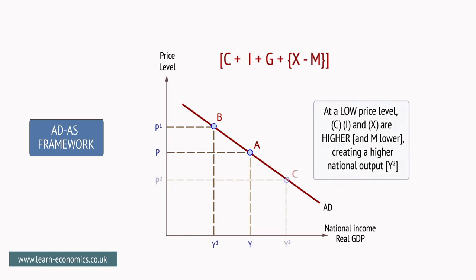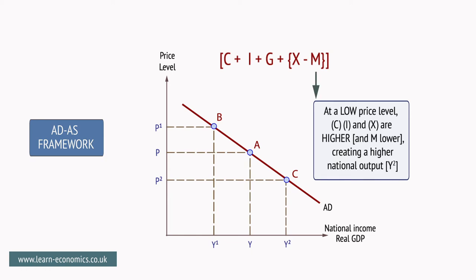At a low price level, C, I, and X are higher, and M is lower, creating a higher national output at Y2.